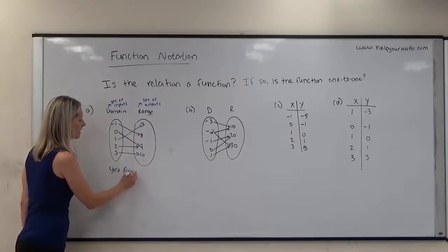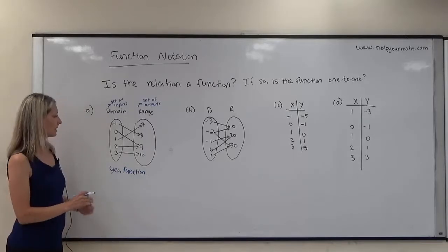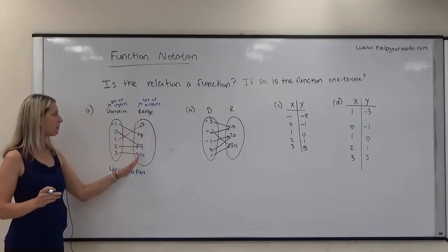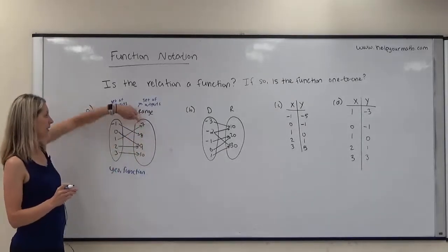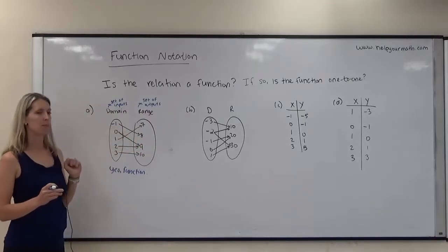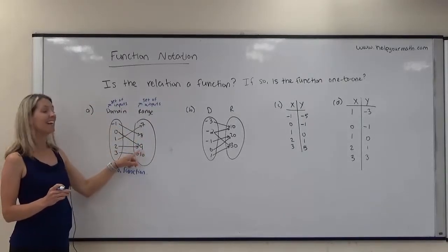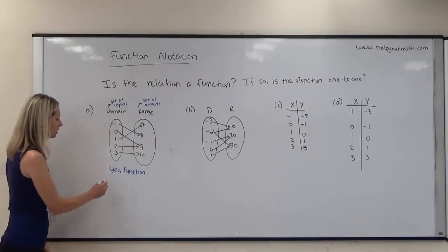Because it's a function, we now want to see whether it's one-to-one or not. So now it's one-to-one if every output has exactly one input. So seven has one input, it had an input of one. Eight has one input, it had an input of negative one. Nine has two inputs. That indicates that this function is not one-to-one.